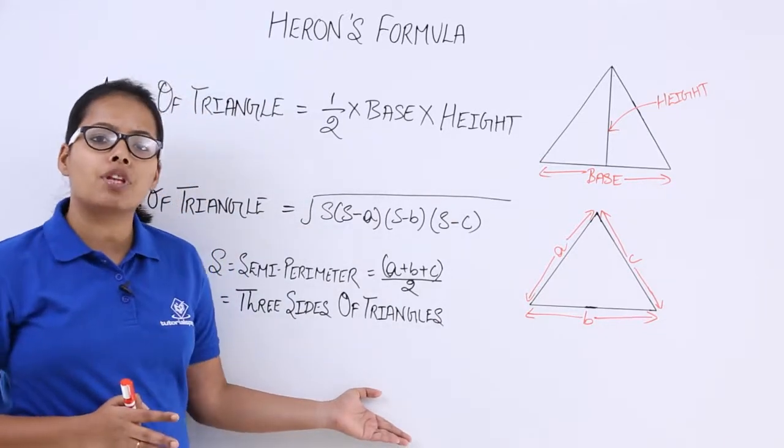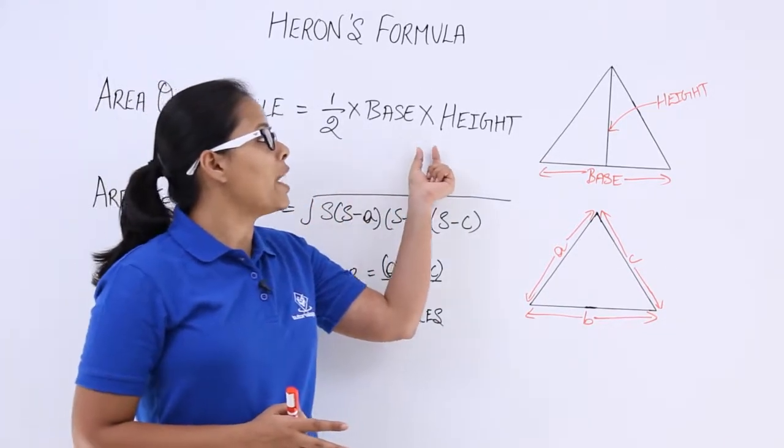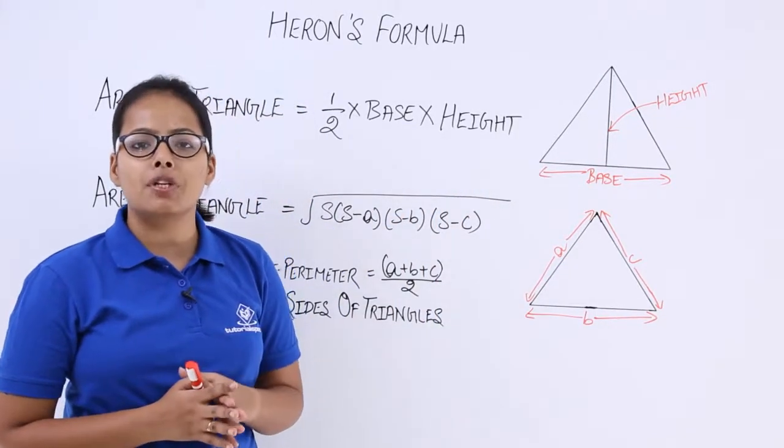So let's see what will be the area for that triangle. Area of a triangle is equal to half into base into height. This formula we have been discussing in the previous video lectures also.